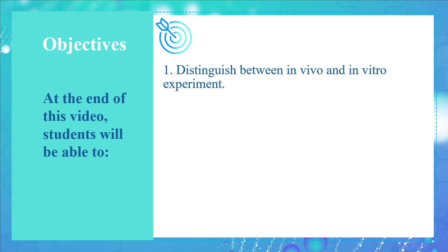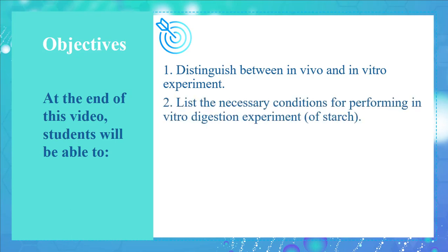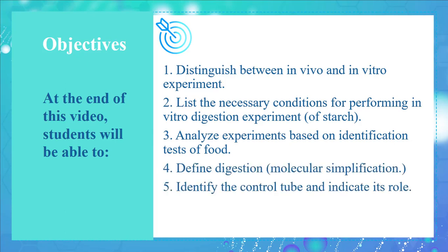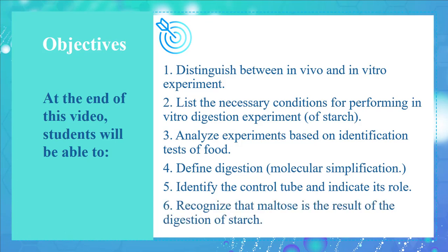At the end of this video, you will be able to distinguish between in vivo and in vitro experiments, list the necessary conditions for performing an in vitro digestion experiment of starch, analyze experiments based on identification tests of food, define digestion or molecular simplification, identify the control tube and indicate its role, and recognize that maltose is the result of the digestion of starch.